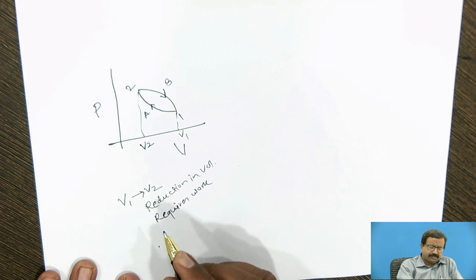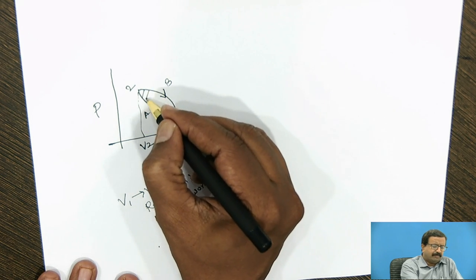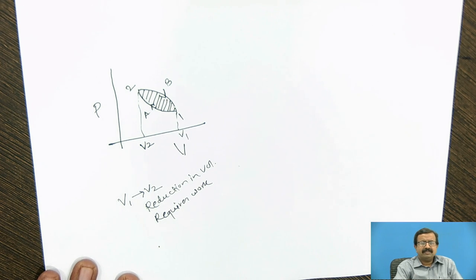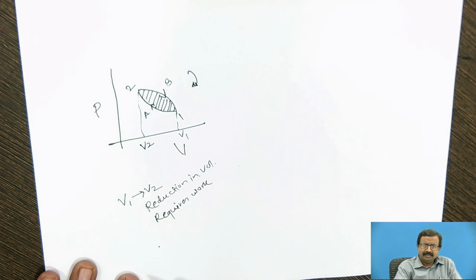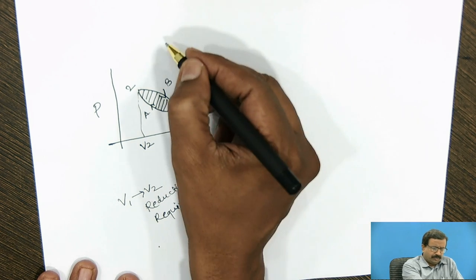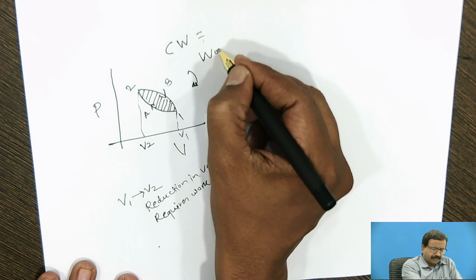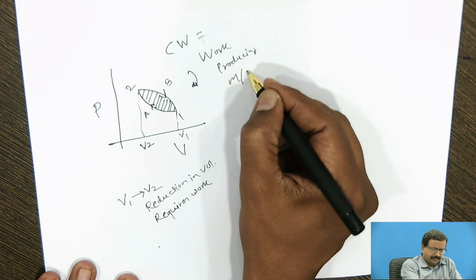But now, suppose I come from process 2 to 1, by process, say path B. Then immediately, we know that now for this process, there is increase in volume. The net work done by this particular cycle, now see the word what I am using, cycle, is the area of the PV diagram. This is a loop. And if this loop is existing, and if I have a cycle which is in the clockwise direction, I will get work output. We have decided that clockwise cycle is work producing. It is work producing machine.